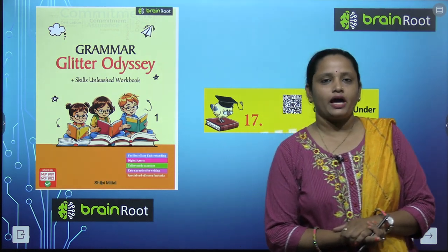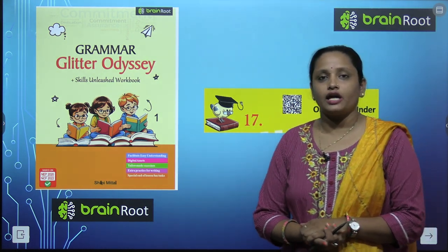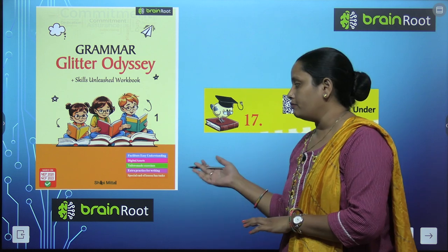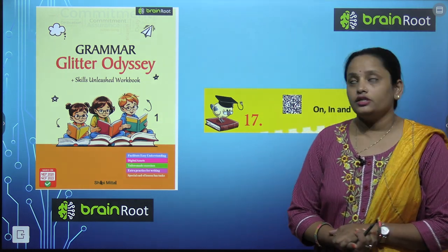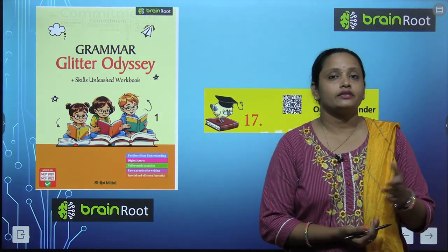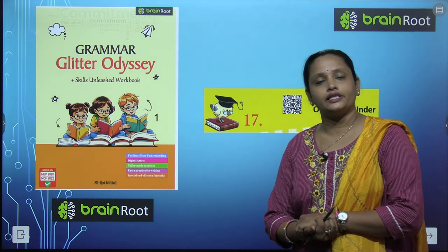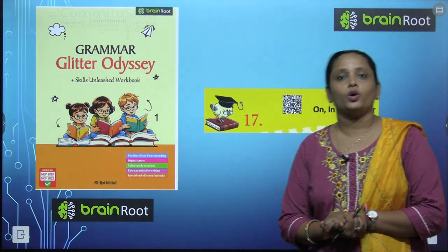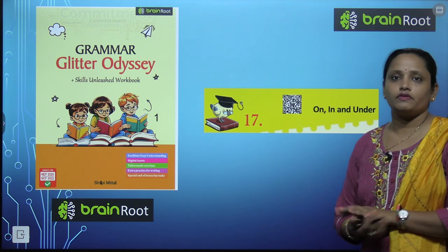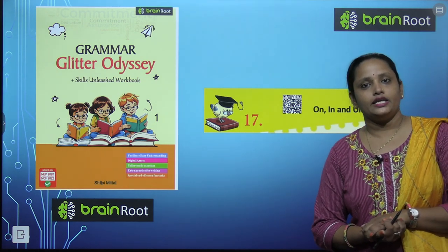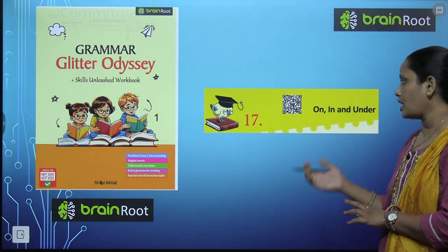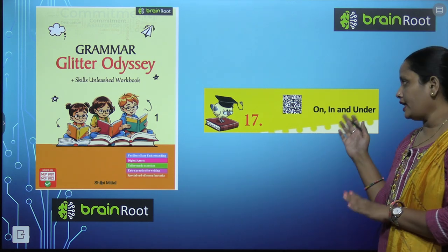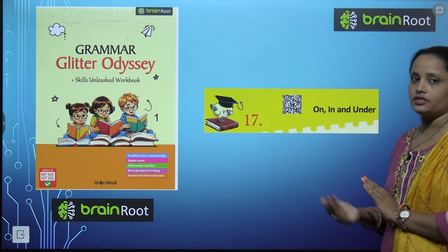Hello my dear kids, welcome back. I am Vandana and we are learning English grammar by Brain Root series. Here is a book and the name is Grammar Glitter Odyssey, this is book 1. Today we will start chapter 17 and the name of the chapter is On, In and Under.